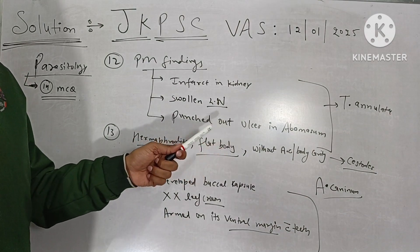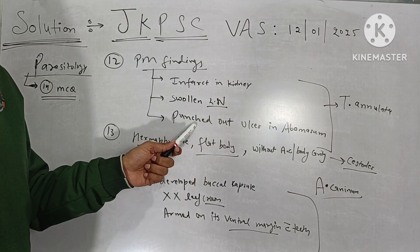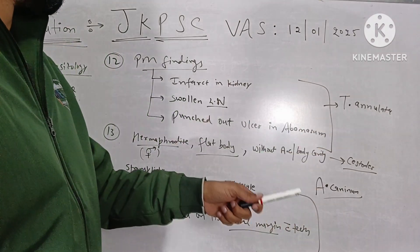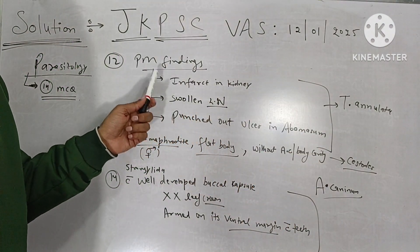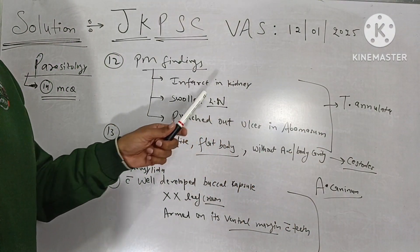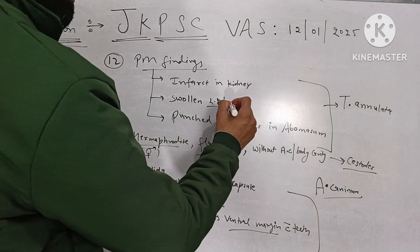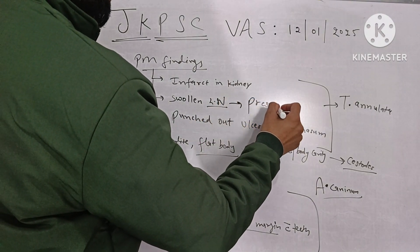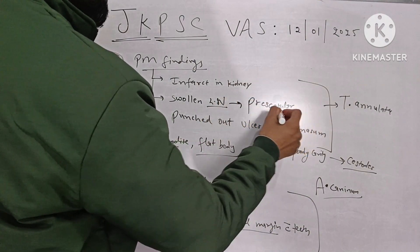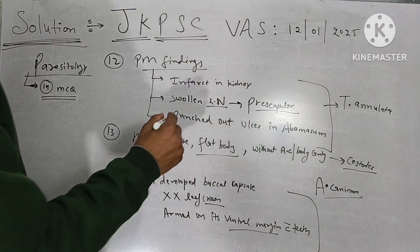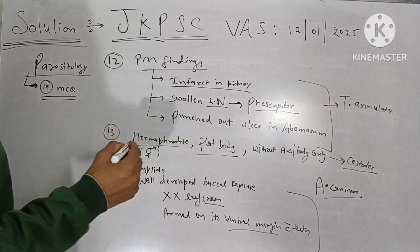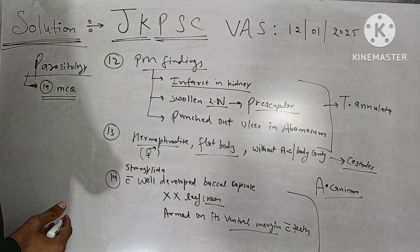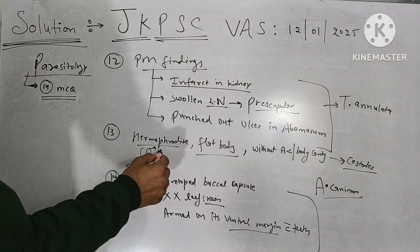Once the point of punched-out ulcer comes up, the answer will be Theileria annulata. The other PM findings are swollen lymph nodes — mainly the pre-scapular lymph nodes are swollen — and infarcts in the kidney. These are the PM findings of Theileria annulata.